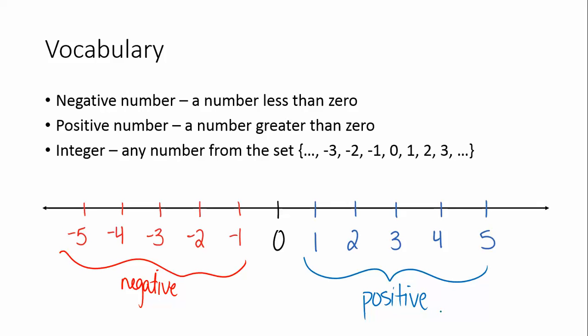An integer is any number from the set of numbers: negative 3, negative 2, negative 1, 0, 1, 2, and 3. The dot, dot, dot on the far left and far right indicates that continues in both directions. It's basically the counting numbers, zero, and the opposite counting numbers.